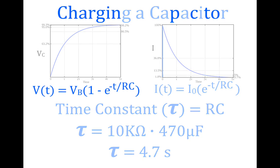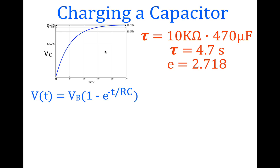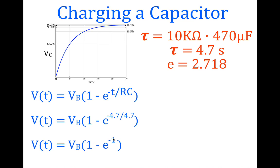Let's look more closely at the voltage equation. We're charging — this is the graph of voltage with respect to time. The equation is V(t) = V_battery × (1 − e^(−t/RC)). For one time constant, with τ = 4.7 s, we substitute t = 4.7 s and RC = 4.7, giving V × (1 − e^(−4.7/4.7)) = V × (1 − e^(−1)). Calculating that term, the voltage across the capacitor after one time constant is 0.632 × V_battery, or 63.2% of the battery voltage.